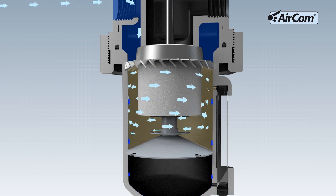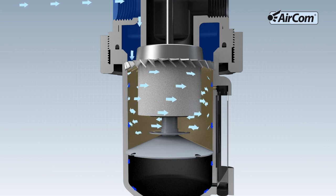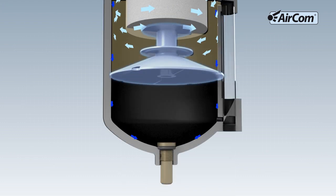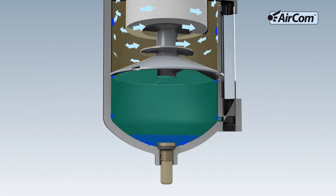The separator disk prevents the collected water, referred to as condensate, being picked up by the airflow again. It divides the filter into a flow zone and a slowdown zone.